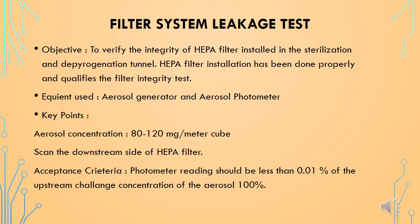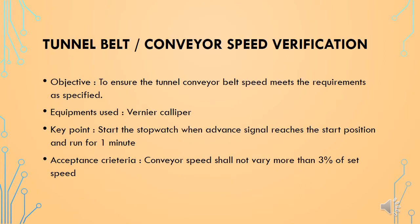To perform this test, the photometer gain or span control for full scale deflection at 100 percent rate shall be set, and then downstream particle count should be checked. The acceptance criteria for this test is that the photometer reading downstream of the HEPA filtration unit caused by leakage should be less than 0.01 percent of the upstream challenge concentration of aerosol at 100 percent.